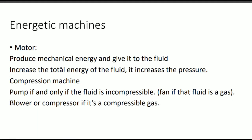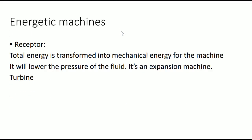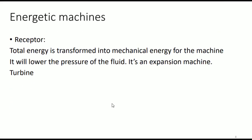An energetic machine can be a motor. In this case it produces mechanical energy and gives it to the fluid — it increases the total energy of the fluid, increases the pressure, and it's a compression machine. It's a pump if and only if the fluid is incompressible. It's a fan if the fluid is a gas and incompressible. It's a blower or a compressor if the fluid is a compressible gas. It can also be a receptor, where the total energy is transformed into mechanical energy for the machine, lowering the pressure of the fluid — it's an expansion machine, so it's a turbine. This is the definition of energetic machines.